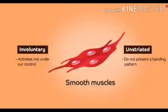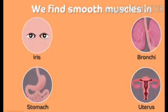Smooth muscles are involuntary and unstriated muscles. We can find them in our iris inside the eyes, bronchi, stomach and uterus. These are involuntary muscles — not under our control. The cells are long with pointed ends and are uninucleate. They are also called unstriated muscles.